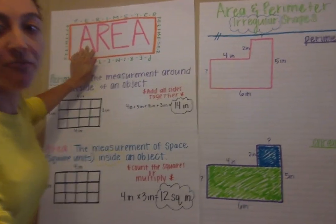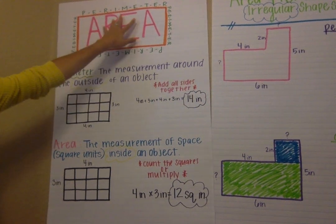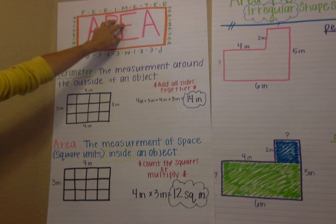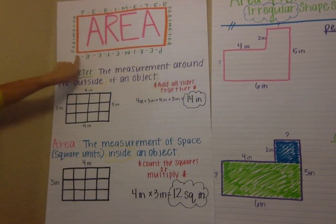Area really has to do with everything on the inside, so everything in here. We want to know how many we can fit into this rectangle box, and then the perimeter is how much we can fit around the outside.